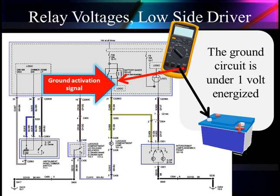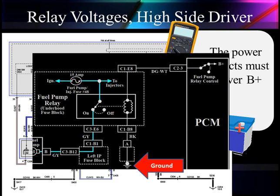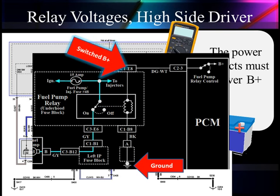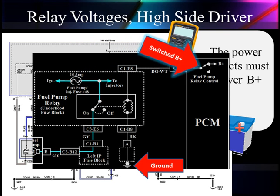Now, not all relays are going to use low-side driver. Where we supply ground is called a low-side driver. Some systems are going to use a high-side driver. This is an example of a GM fuel pump. This relay is switched to B+, from inside the PCM. It's going to supply B+, which is going to supply current flow, to the coil. The coil is always grounded. That's going to energize the blue circuit over there, closing the relays for the fuel pump and starting the fuel pump in this particular example.